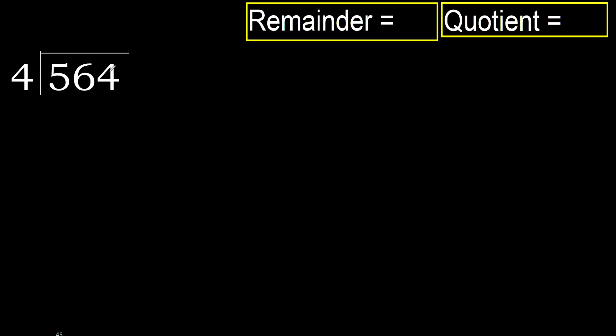564 divided by 4. 5 is not less, so we start with 5. 4 multiplied by which number is nearest to 5 but not greater? 4 multiplied by 2 is 8 — 8 is greater. Multiply by 1 is 4. It is not greater, ok. Subtract: 5 minus 4 is 1.